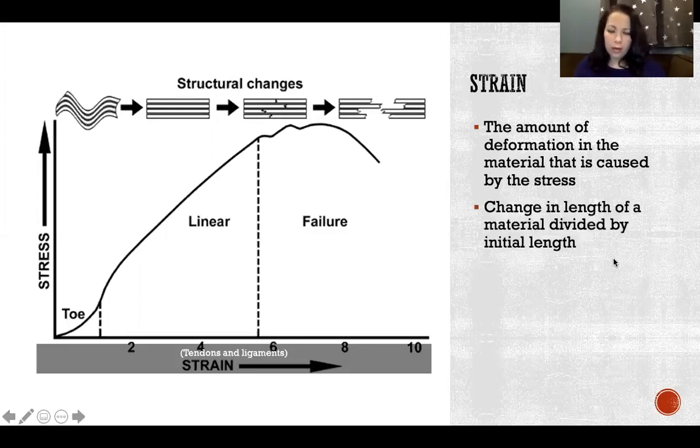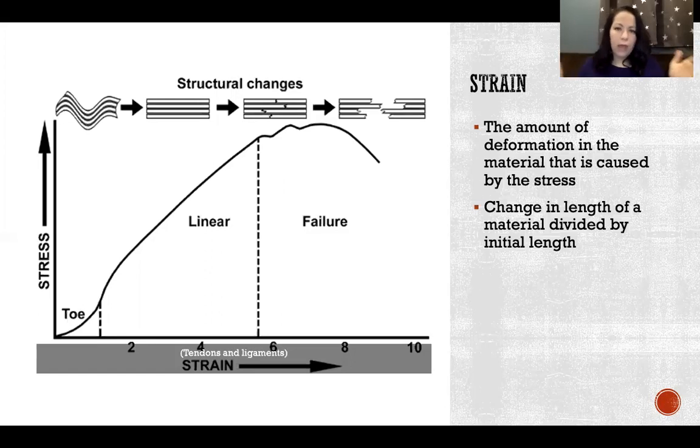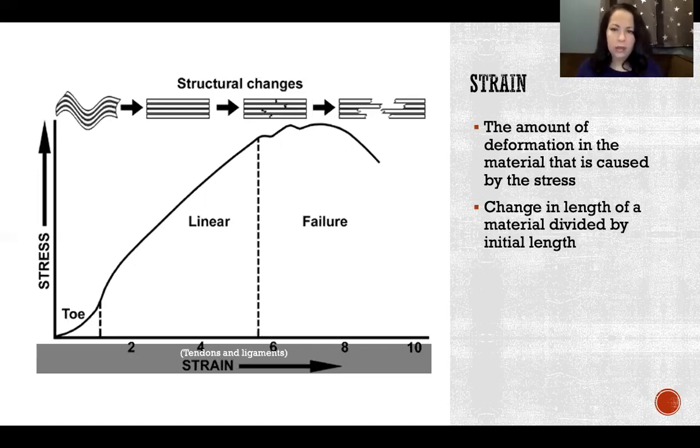We calculate strain by taking the change in length of the material divided by the initial length. First you have to see the change in length by subtracting the starting length from the ending length. Then we take that amount of change and divide it by the starting length, and that is the strain. We represent it as a percentage of change in length.